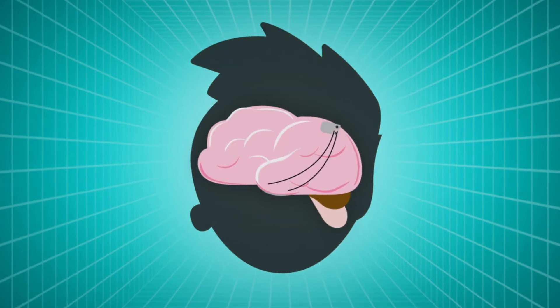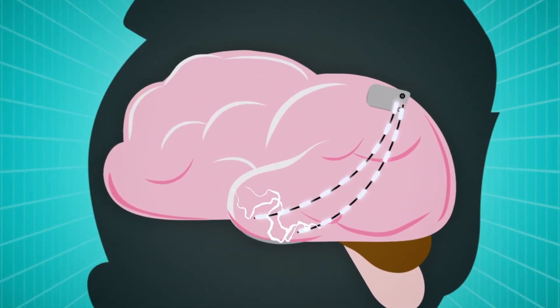Here's how it works. As it monitors brain waves, the RNS System responds to unusual brain activity by sending electrical pulses to stimulate the area affected. This helps to stop the seizure before it starts.